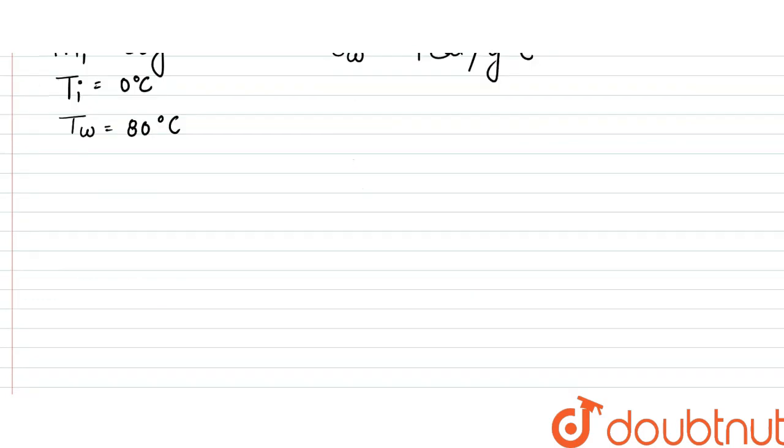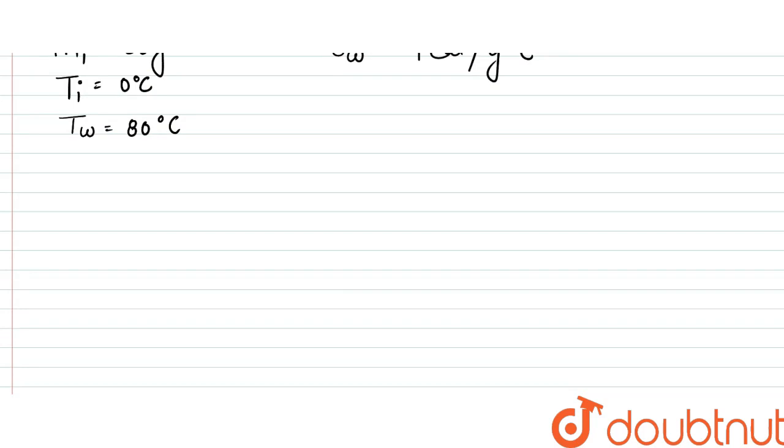So in a calorimeter, what happens is the amount of heat lost by the water is equal to the amount of heat gained by the ice. So amount of heat lost by the water, that is Qw, we can write, that would be equal to mw·sw·ΔT.